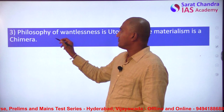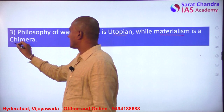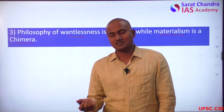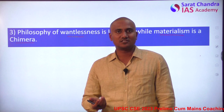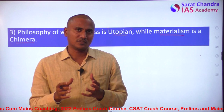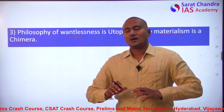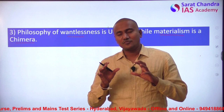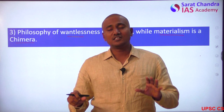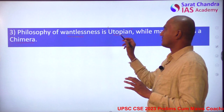Let us go to the third essay now. The topic given is: 'Philosophy of wantlessness is utopian, while materialism is chimera.' Wantlessness means not having any desires, not really wanting any material things — as practiced by Mahavira Jain, Buddha, and many other sages. Utopian is an ideal perfect world which we would like to exist but in reality is not possible. So wantlessness is utopian means a world where people have no desires would be ideal, but in reality it is not possible — it is almost impossible for any of us to maintain complete wantlessness. That is the meaning of the first part of the statement.